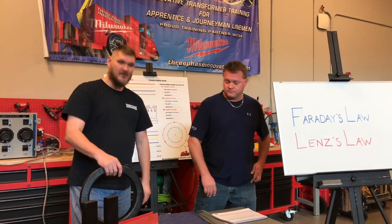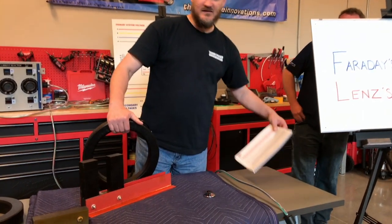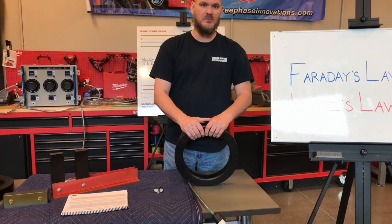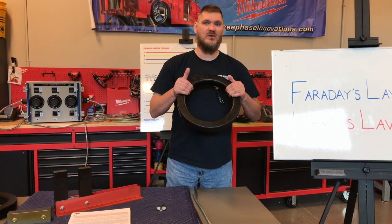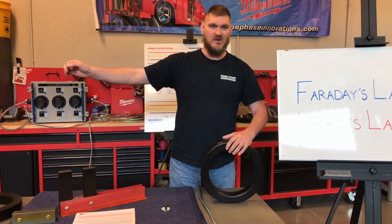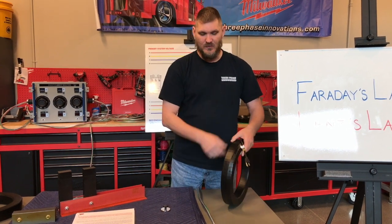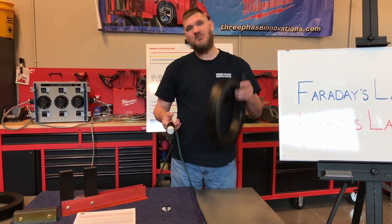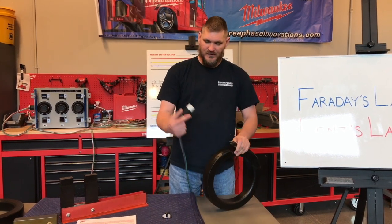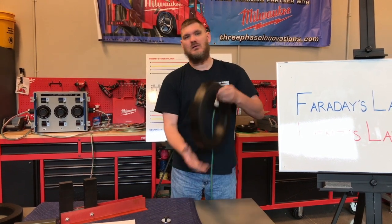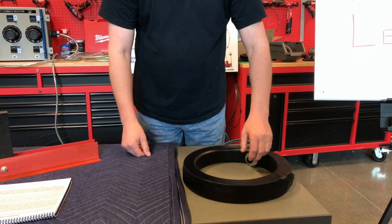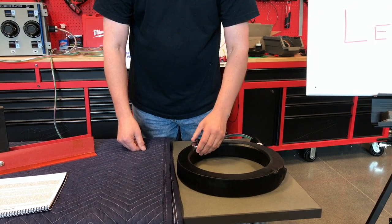Jason is going to show you how these things work visually. Here's a primary coil of a transformer. As you can see, the wire is wound up. If I took this wire and straightened it out into one long straight piece and plugged it into an outlet, it would trip the breaker. But I've taken this same piece of wire and wound it up in a coil. When I plug this in, we actually now have a magnetic field and the breaker's not tripping.